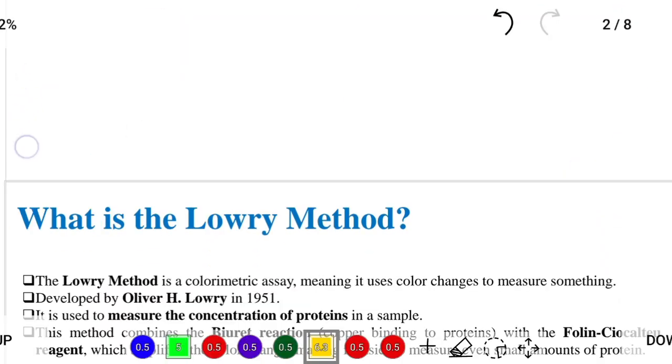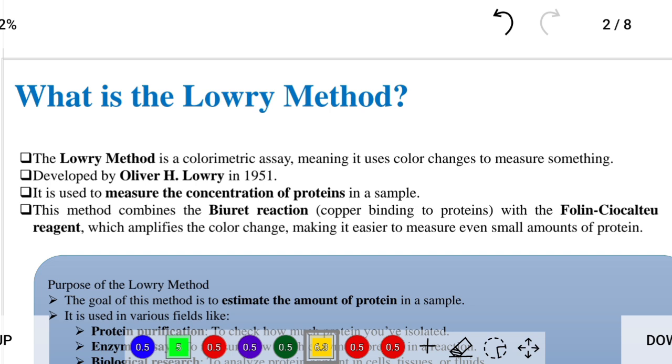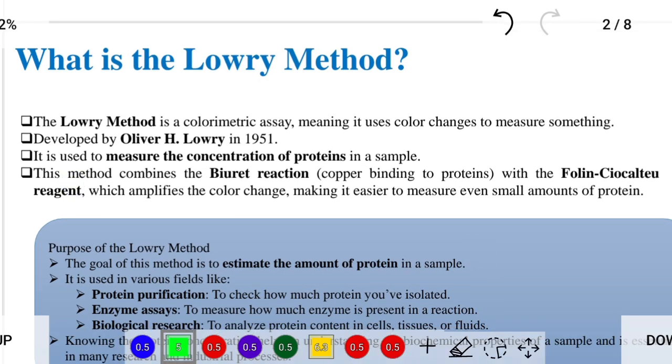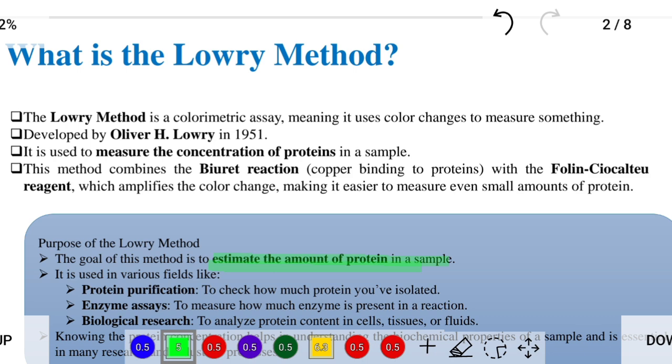Hello everyone, so today we are going to learn about the Lowry method. What is the Lowry method, what is the principle, what are the steps which we will perform in lab, which reagents and chemicals we use for this method. Basically, the Lowry method is used to estimate the amount of protein which is present in our sample.